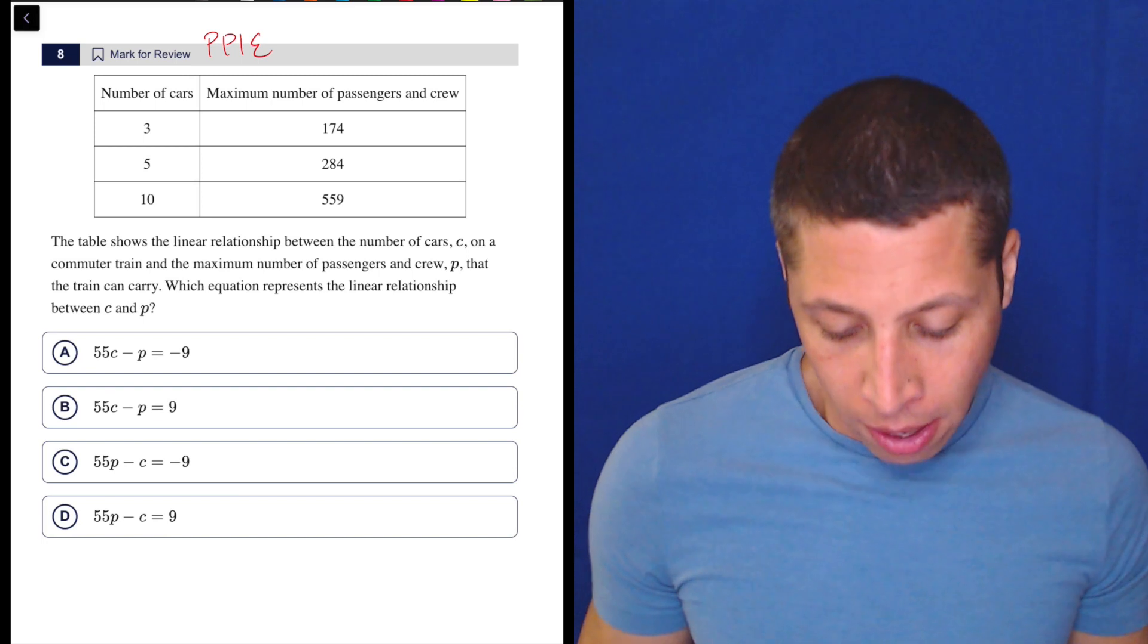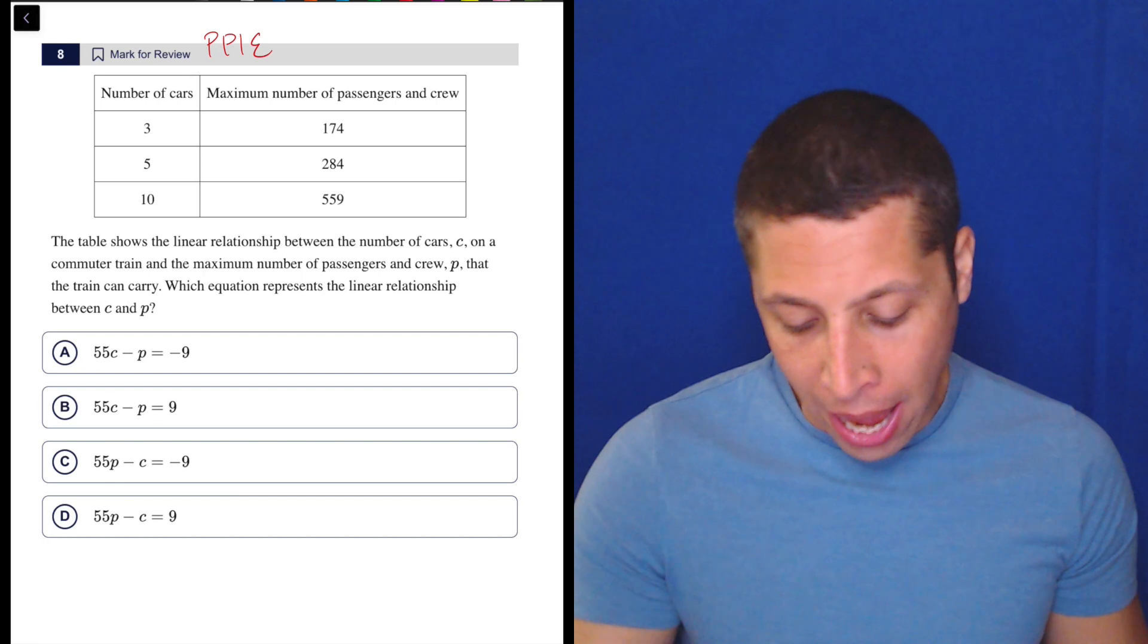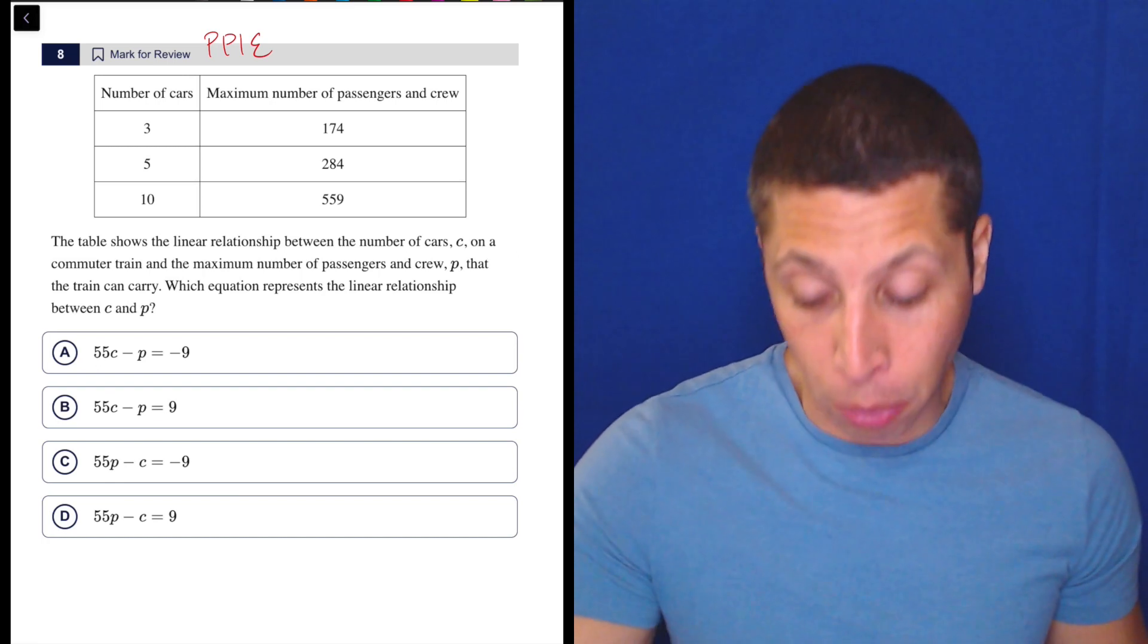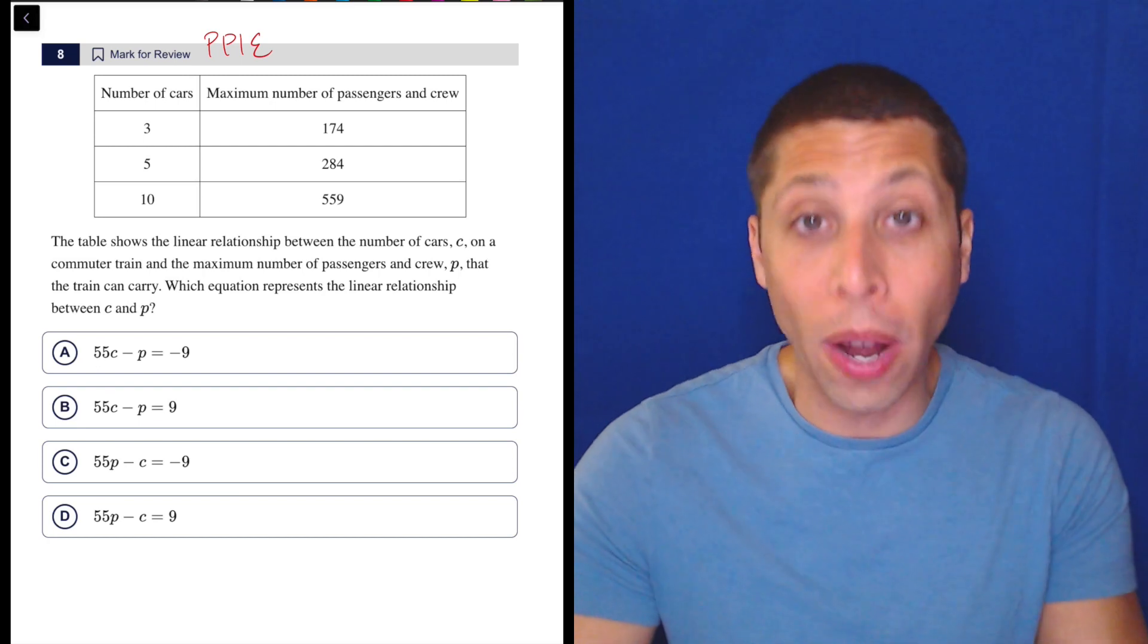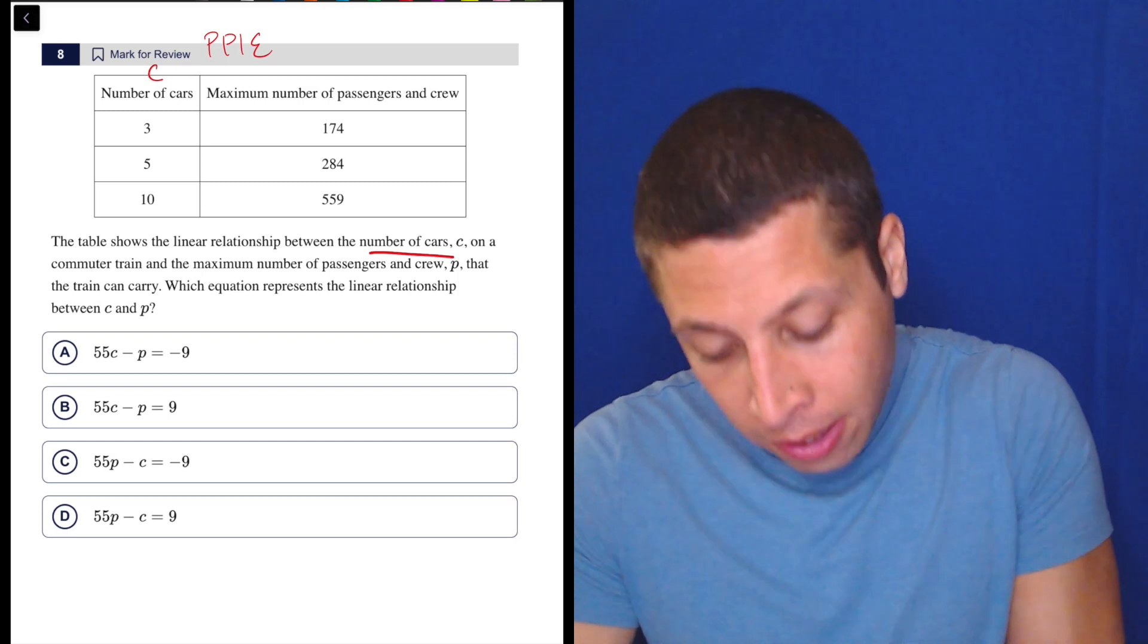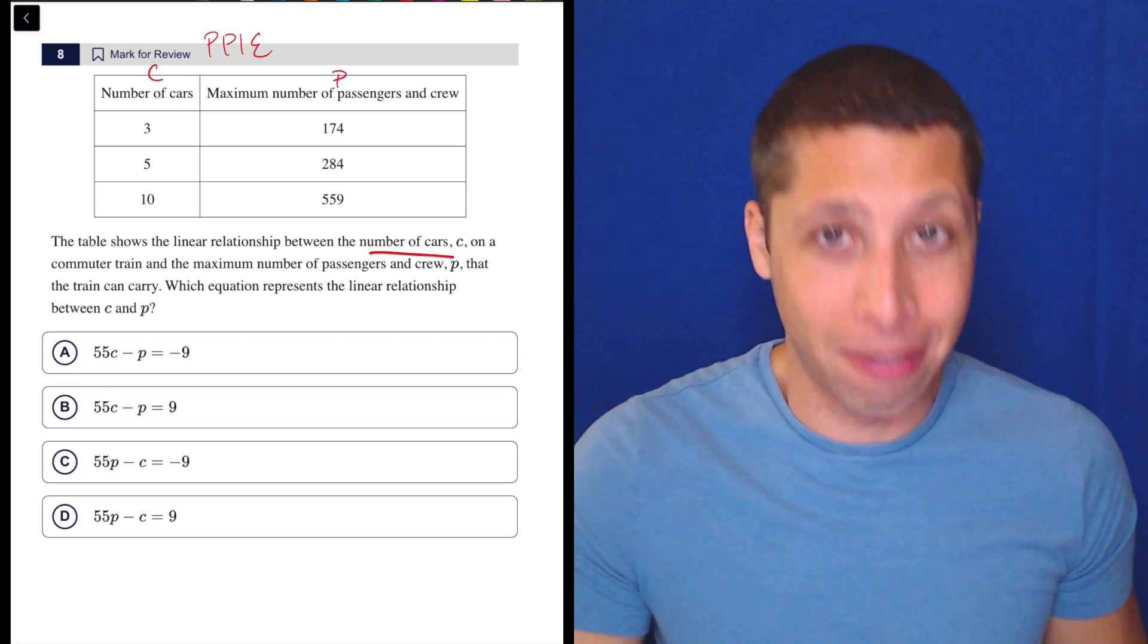Now they make it very clear what c and p are, so we should be careful here because notice that between A and B and C and D, they're flipping the relationship. They're putting the p and the c in different places. We need to know what we're getting so we plug in the right place. They tell us that c is the number of cars, and then this must be the p. It doesn't take more than a second to get that out.